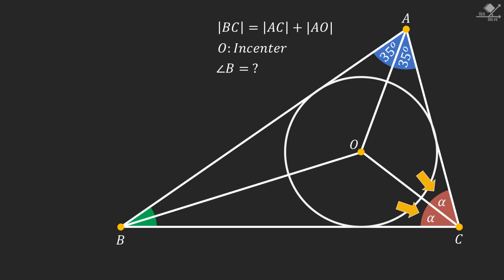Now connect the incenter with point B and call these equal angles as beta. Now pick a point D on line segment BC such that DC is equal to AC, and also connect this point D to the incenter.